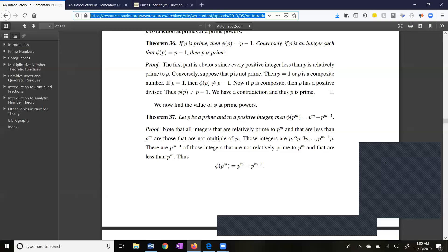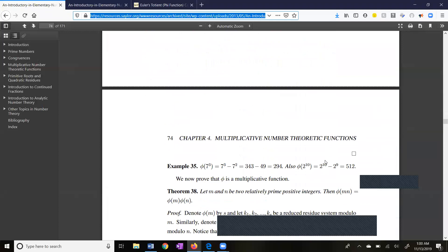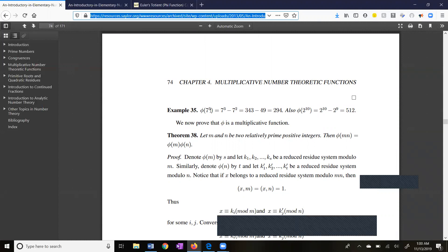Let's take a look at a couple examples. Let's say we wanted phi of 7 cubed. Well, 7 cubed is off my chart and I cannot break it up into two relatively prime numbers, but I can use my theorem. 7 cubed minus 7 squared. I can run that into a calculator and I get 294. Phi of 2 to the 10th is 2 to the 10th minus 2 to the 9th, which is 512.